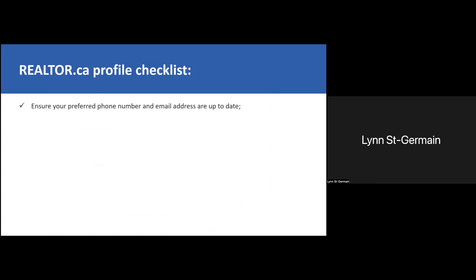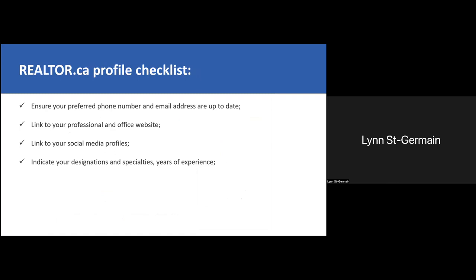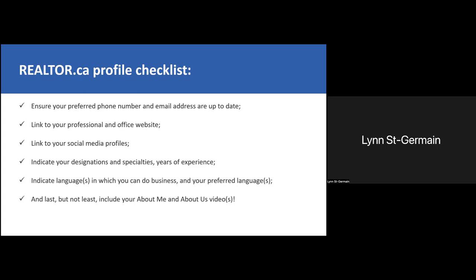Here's a checklist for your profile. Always ensure that your preferred phone numbers and email address are up to date — and everything I'm going to mention has to be done through your board. Link to your professional and office website. Link your social media profiles — most of us have at least one. Indicate your designations, specialties, and years of experience. Talk about yourself and don't be afraid to share your strengths. Indicate the languages in which you can do business. And last but not least, make sure to include the 'About Me' and 'About Us' videos.